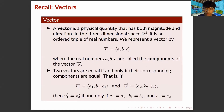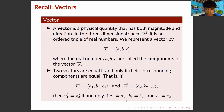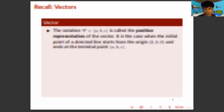We can say that two vectors are equal if and only if their corresponding components are equal. That is, vector V1 equals vector V2 if and only if A1 equals A2, B1 equals B2, and C1 equals C2.